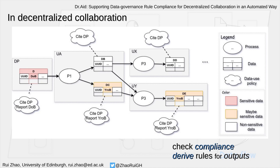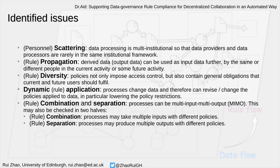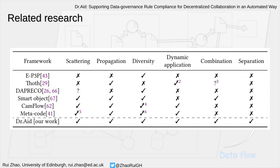Therefore, when checking compliance for data use rules, or when we try to derive the data use rules for outputs, the issue becomes really complicated because the rules may be merged or they may have changed due to changes in the corresponding data. With that, we identify the following issues: personnel scattering, rule propagation, rule diversity, dynamic rule application, and rule combination separation — which can be considered in two halves: rule combination and rule separation.